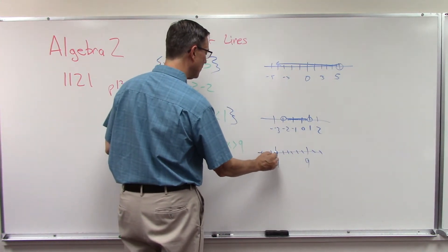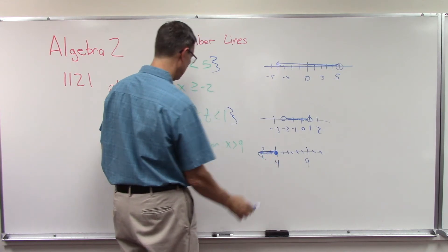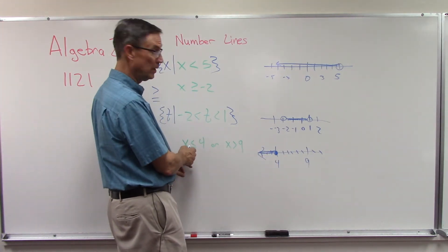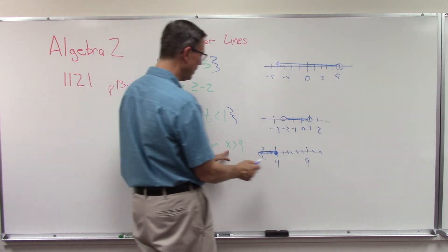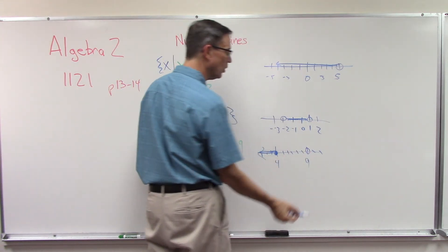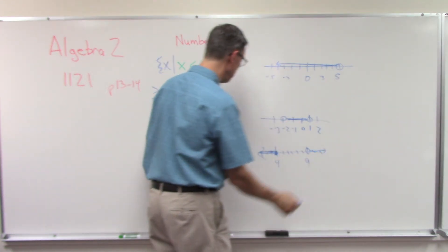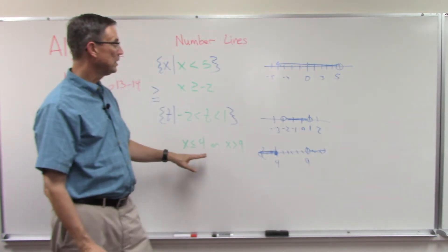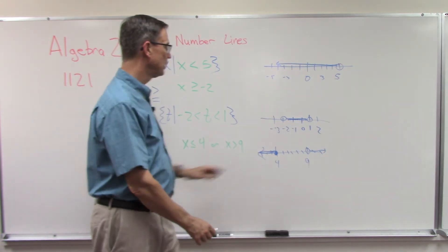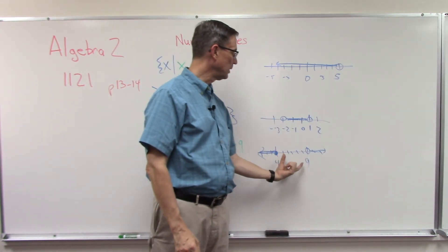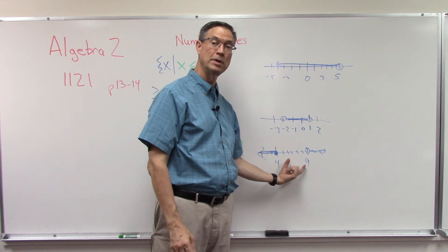So the 4 means it's going this direction, and notice I filled it in because it's or equal to. Over here though, it's greater than 9, so it's just an open circle, and then we go to the right because it's greater than 9. So basically, it's everything this direction, everything that direction, and the only thing that does not satisfy both conditions is right here in the middle.